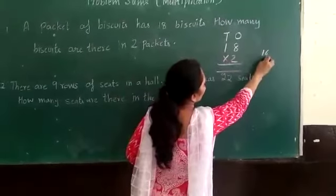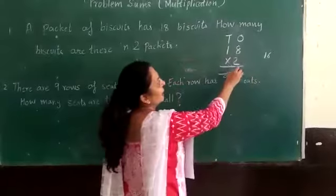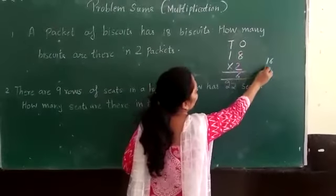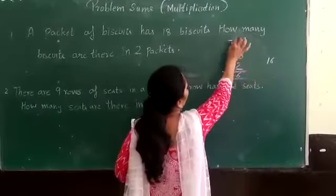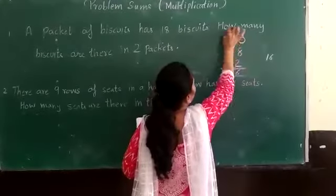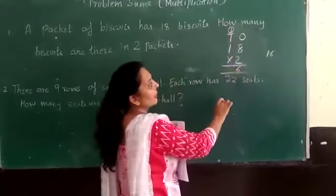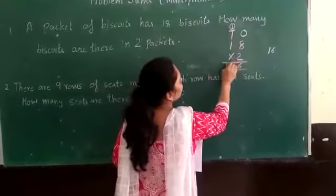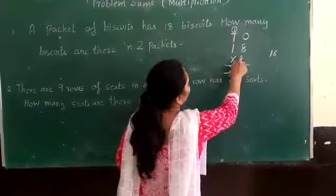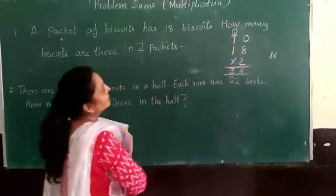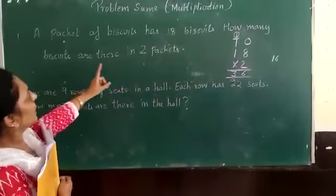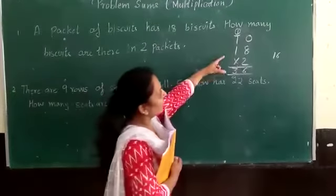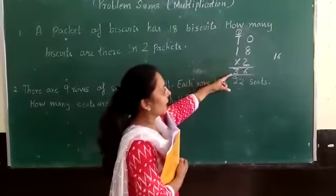16 — we write 6 and carry 1. So we get 160. Now, if one packet is 18 biscuits, then we say 18 multiply by 2 equals 36.